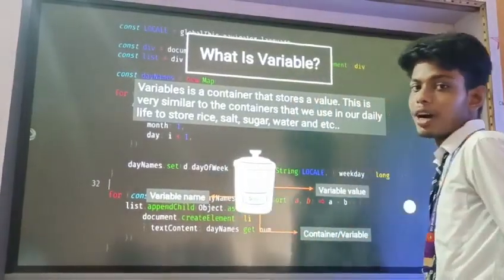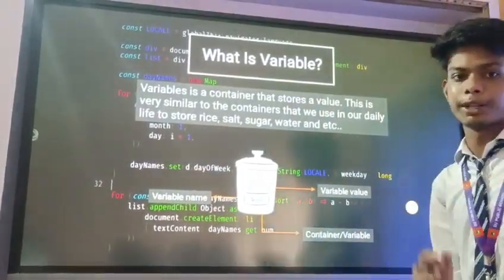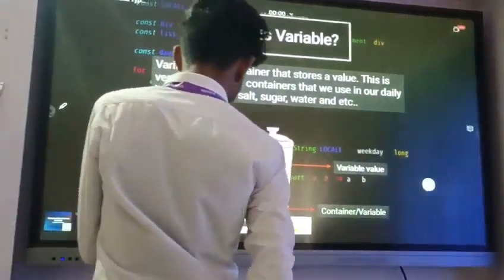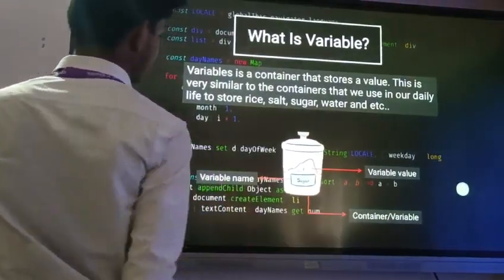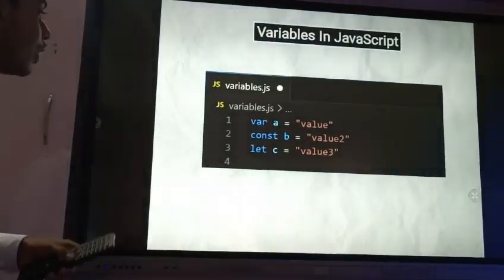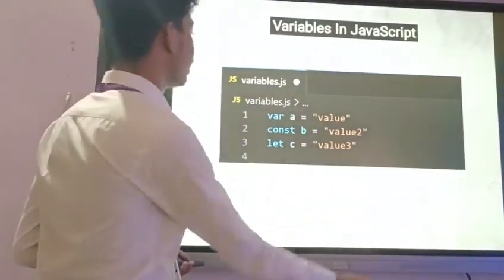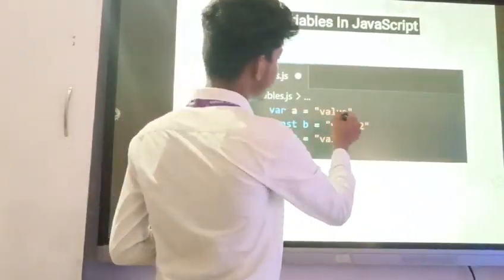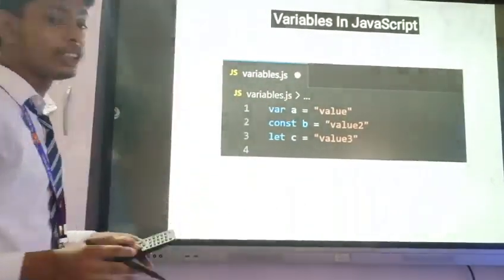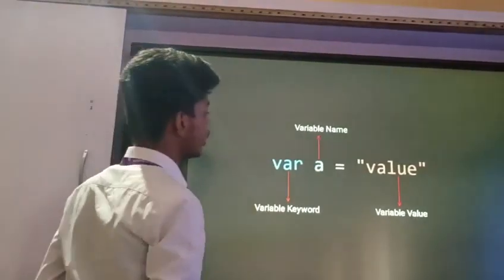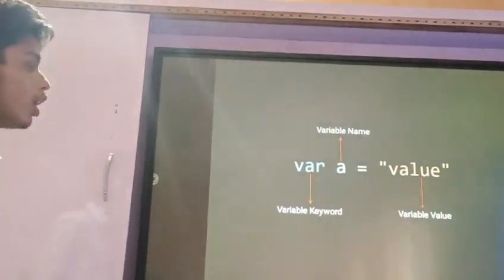Now I will show this in the JavaScript code. Here is the JavaScript code of variables. Here is the variable name and here is the variable instruction. I will explain to you clearly all about variables.